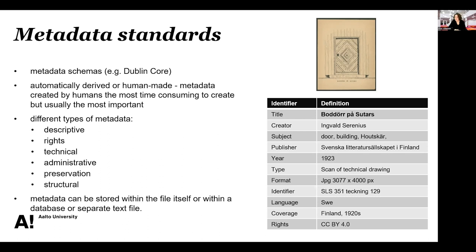There's an example on the right — a drawing with a Dublin Core description of metadata about it. It has a title, creator, subject, and notably the language code is 'SWE' using country codes. So if metadata is in a standardized form, it becomes readable by humans but also by machines. Dublin Core is one of the most popular ones in the humanities. It is worth doing a bit of research about which metadata standards are used in your field, and what information is key to include with your data files to make them understandable and possibly reusable to others. This metadata can be stored within the file itself, within a database, or in a separate text file.